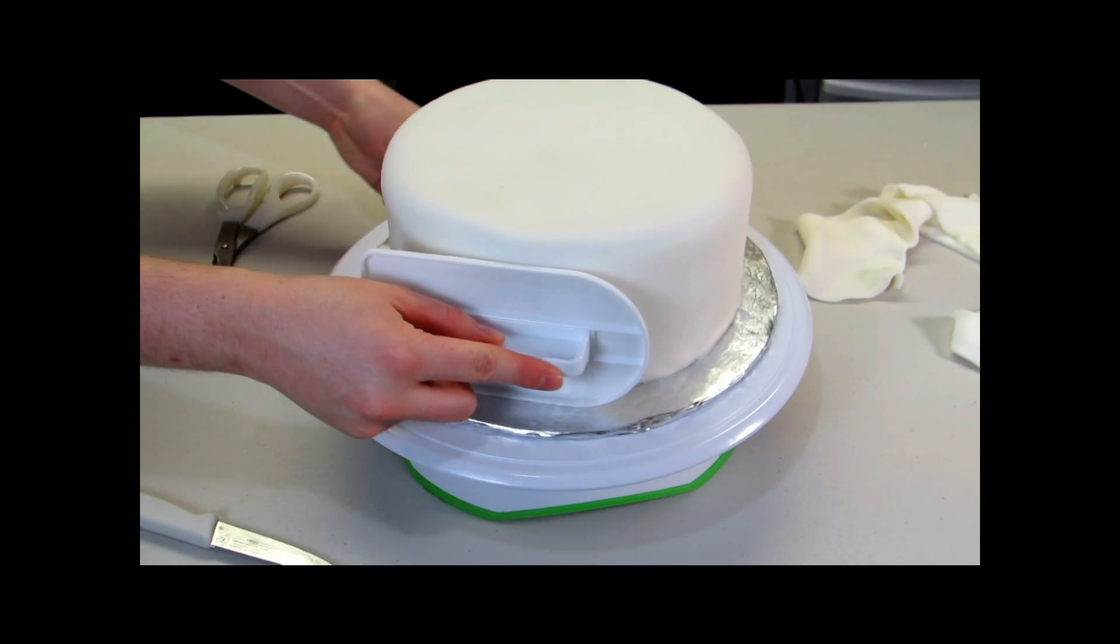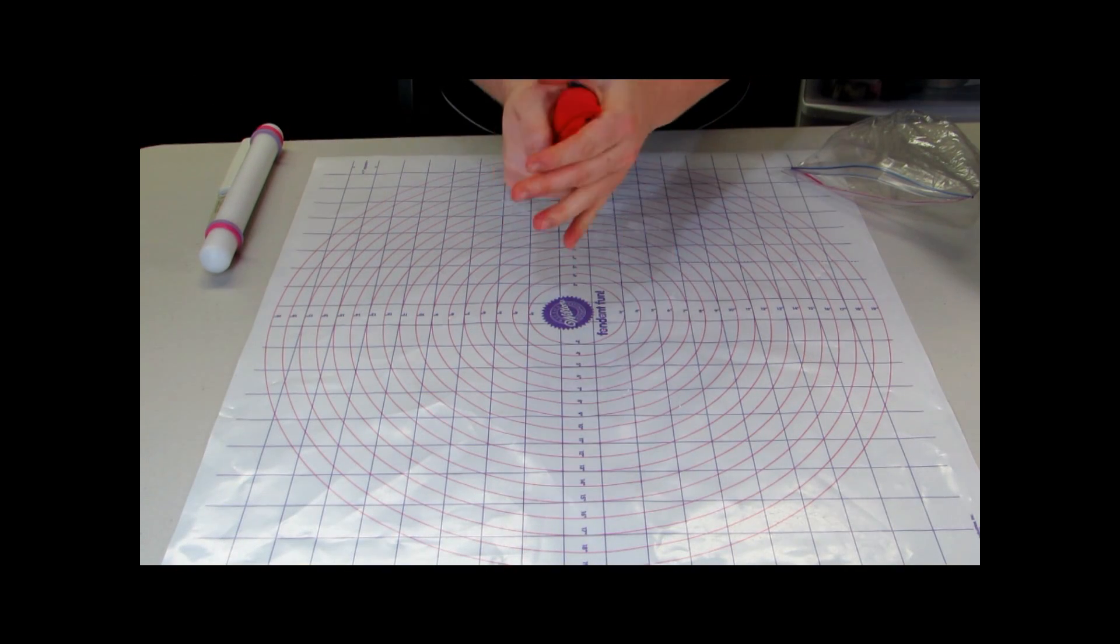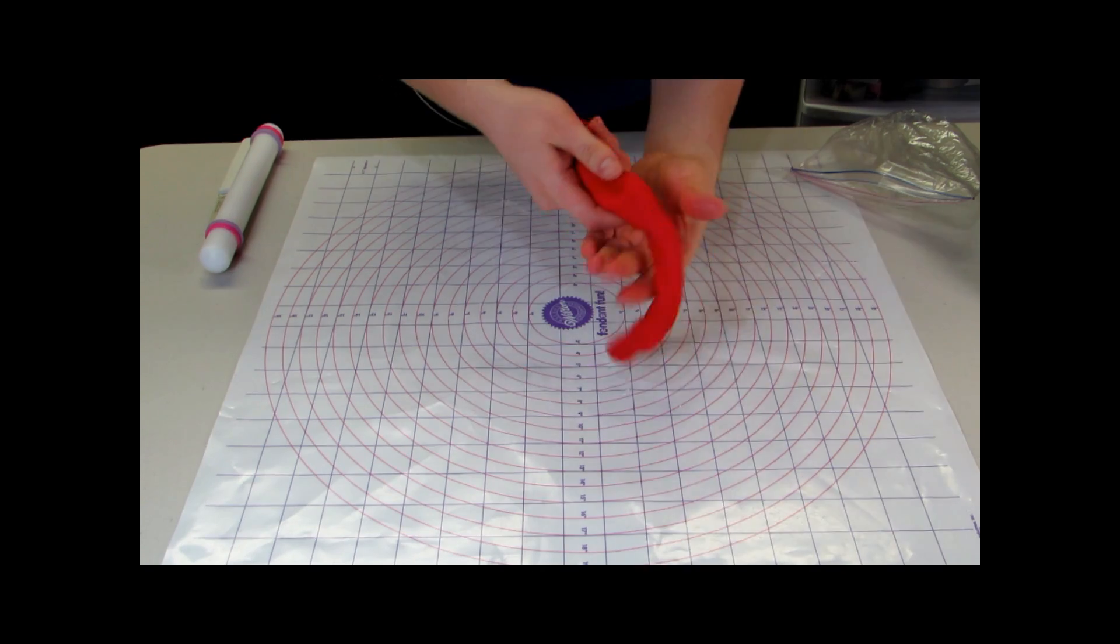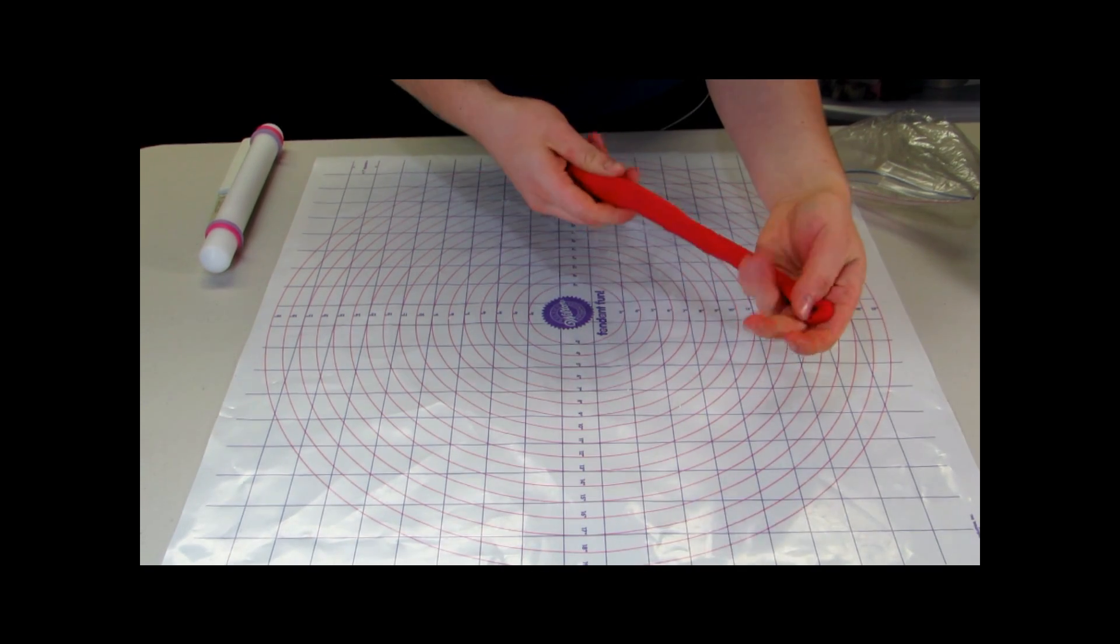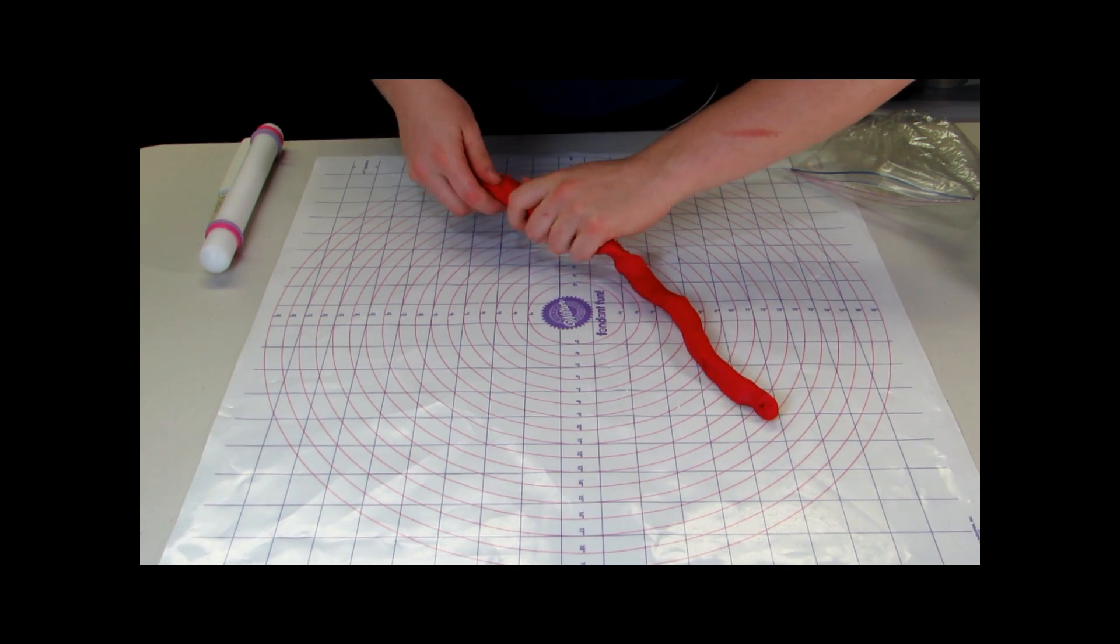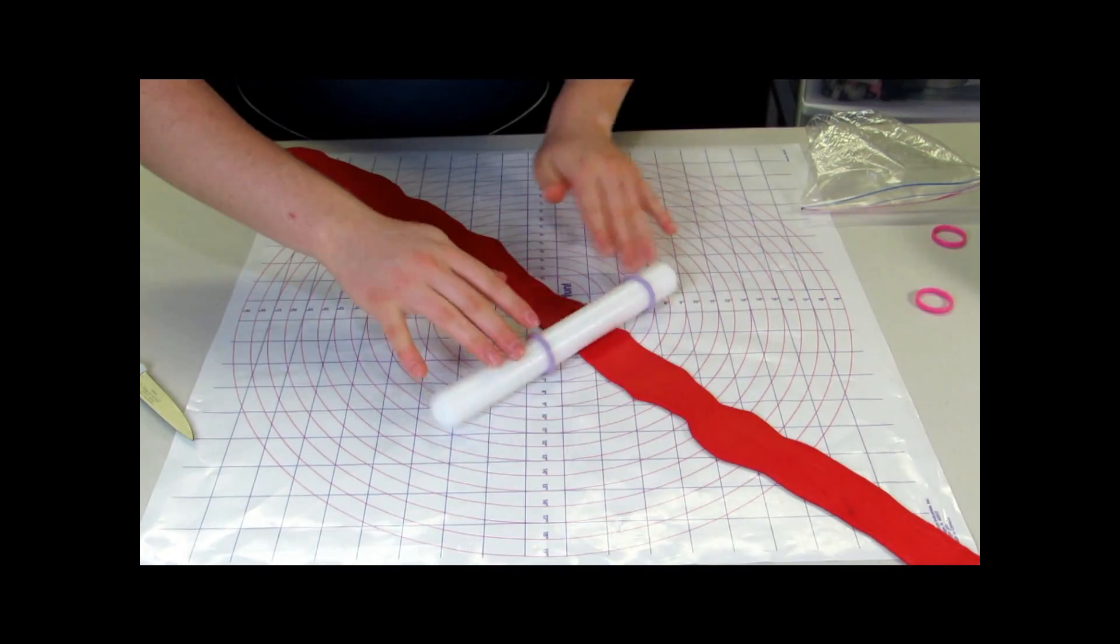And just smooth out your cake. So I've decided for around the base of my cake, I'm going to do a little bit of a red ribbon. So I'm just taking some red fondant and I'm just kind of creating the shape that I want so that way I'm not rolling out a giant sheet of red fondant and then cutting out a small rectangle.